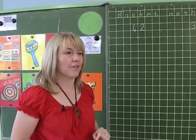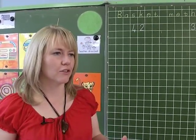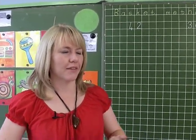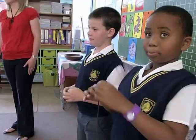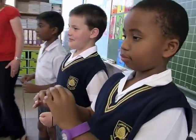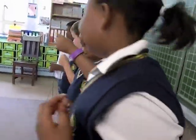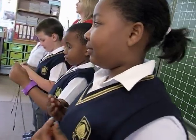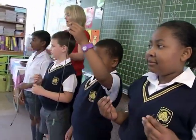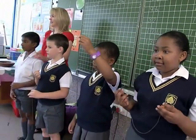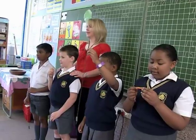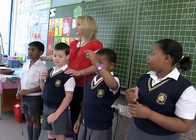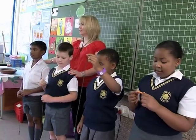I would like the following children to come to the carpet with their string of bees: Keelan, Zandile, Tristan and Pearl. Everyone's going to answer this one together. How many bees does Tristan have? 10. And Keelan? 10. So if I put Tristan and Keelan together I have? 20.